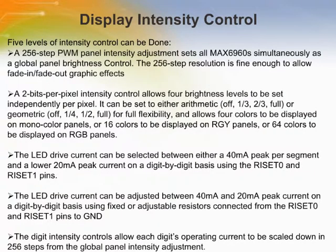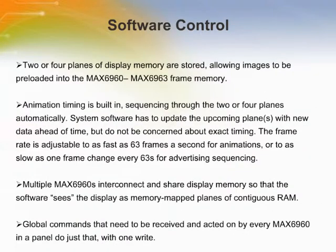Display intensity control can be achieved through any of the listed levels. For example, a 256-step PWM panel intensity adjustment sets all MAX6960s simultaneously as a global panel brightness control. The 256-step resolution is fine enough to allow fade-in and fade-out graphic effects. Another example is adjusting the drive current between 40mA and 20mA peak on a digit-by-digit basis using fixed or adjustable resistors connected from the RSET0 and RSET1 pins to ground. The software control for MAX6960 allows two or four planes of display, with animation timing inbuilt to the device sequencing two or four planes automatically. The frame rate is adjustable to as fast as 63 seconds for advertising sequencing.